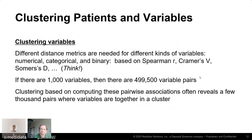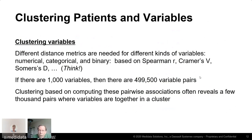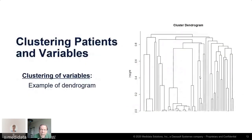For clustering variables, different distance metrics are needed for numerical, categorical, and binary variables. Metrics can be based on Spearman correlation, Cramér's V, and Somers' D. If there are a thousand variables, there are N times N minus one over two — 499,500 variable pairs — more than anyone wants to review manually. Clustering based on computing pairwise associations in an automated way often reveals a manageable few thousand pairs where variables cluster together.